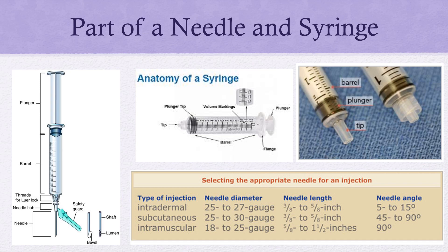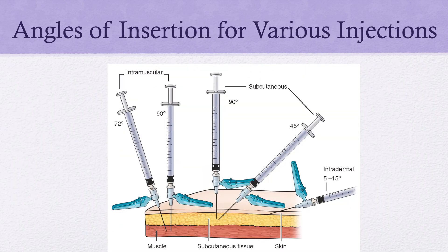This slide shows the angles for each injection route. For intradermal, which is just below the upper skin layer, use a 5 to 15 degree angle. For subcutaneous, it depends on patient size — very small patients use a 45-degree angle, while larger patients can go in at 90 degrees. For intramuscular, you'll pretty much always use a 90-degree angle to get into that muscle.